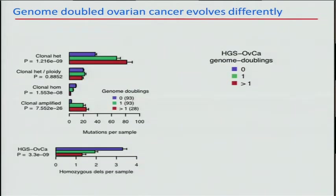In ovarian cancer, the number of clonal heterozygous mutations increases as a function of genome doubling. However, if you divide by ploidy, that effect totally goes away, meaning the mutation rate per base is probably the same across these samples — what you're seeing is just the effect of more DNA at risk to be mutated. On the other hand, clonal homozygous mutations tend to decrease as a function of genome doubling, since after doubling the genome it becomes significantly harder to create a homozygous copy alteration or mutation. Homozygous deletions in ovarian cancer tend to go down as a function of genome doublings.